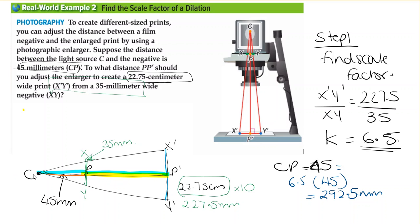But we need the distance from P to P', so we're going to minus 45. To find PP', which is in yellow, we do 292.5 minus 45, which gives us a final answer of 247.5 millimeters.